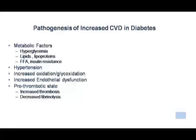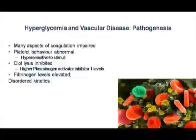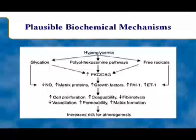Regarding pathogenesis of increased cardiovascular disease in diabetes, metabolic factors include hyperglycemia, lipids, lipoprotein abnormalities, free fatty acids, insulin resistance, hypertension, increased oxidation, glyco-oxidation, increased endothelial dysfunction, and a pro-thrombotic state. Many aspects of coagulation are impaired — platelet behaviour is abnormal, clot lysis is inhibited, fibrinogen levels are elevated. The possible biochemical mechanisms involve hyperglycemia acting through the polyol pathway, increased PKC, diminished nitric oxide, increased cell proliferation, and increased coagulability, ultimately leading to increased risk for atherogenesis.